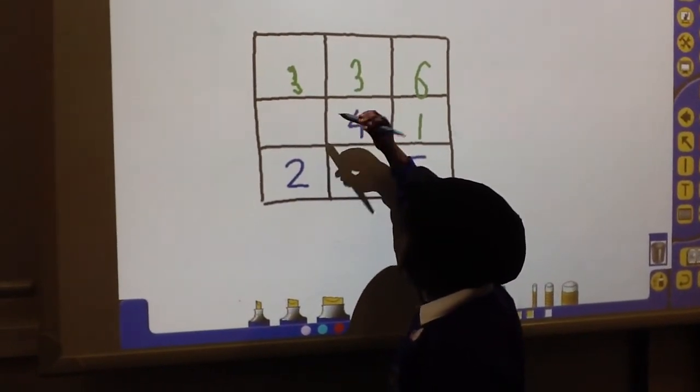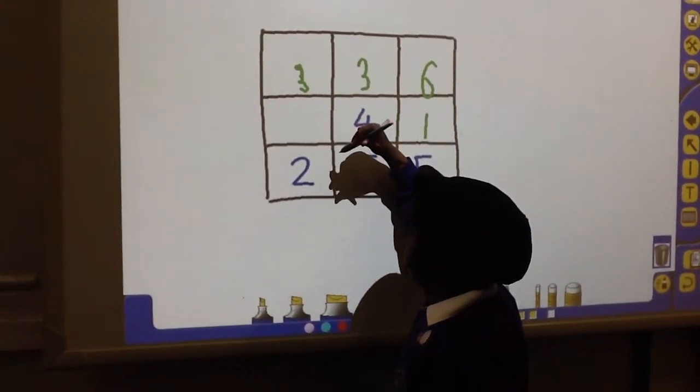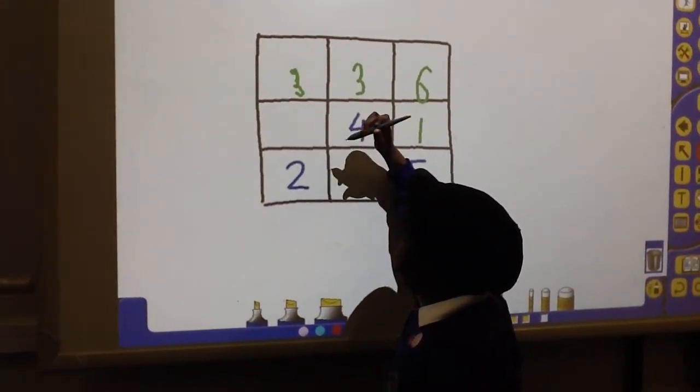So 5 add something equals 12. It's 7. So 5 add 1.